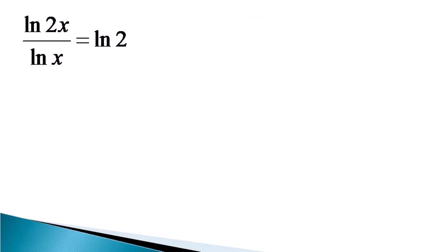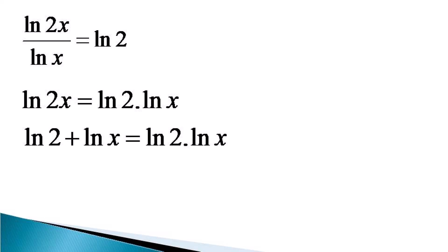To solve this equation, first we make use of cross multiplication to get an equivalent equation as ln(2x) is equal to ln2 into lnx. On the left hand side we make use of the multiplication property of log, which makes it as ln2 plus lnx being equal to ln2 into lnx.